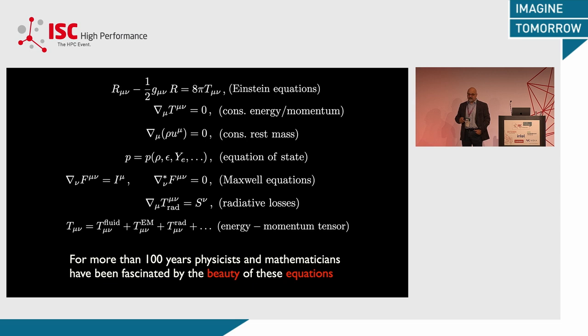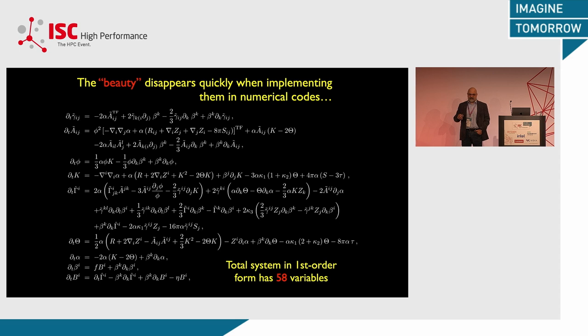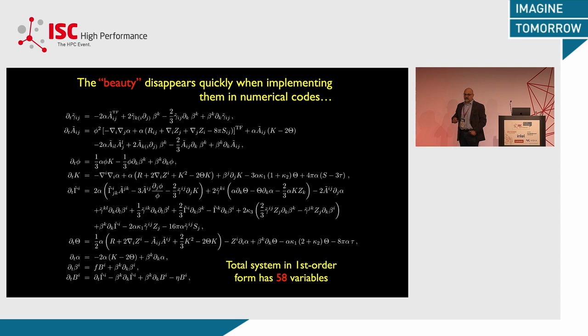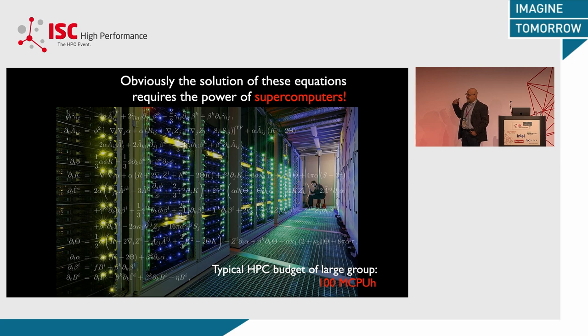Their beauty disappears very quickly once you try to actually solve them. Because those equations then have to be written in something where on the left-hand side you have a time derivative of tensors, and on the right-hand side a complicated setup involving up to second-order partial derivatives. The CCZ4 system, mentioned in the previous talk, has 58 variables that need to be evolved at every time step. This is why progress in this area has been so tightly connected with progress in HPC.